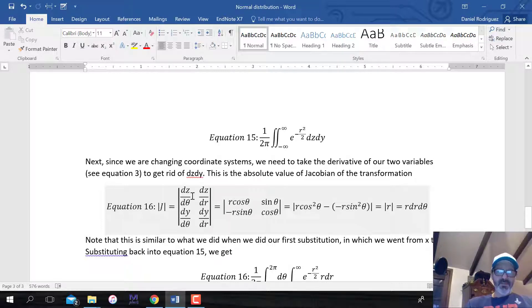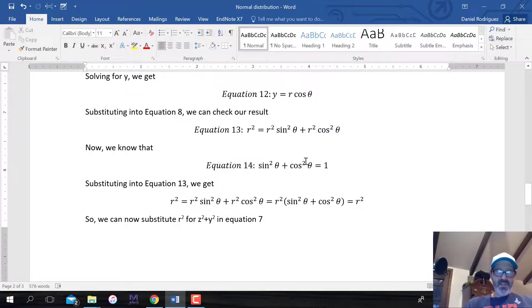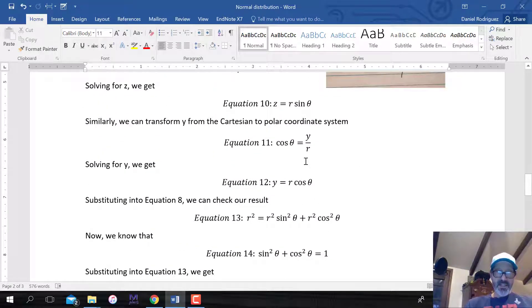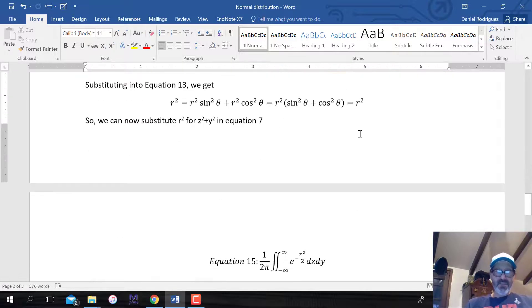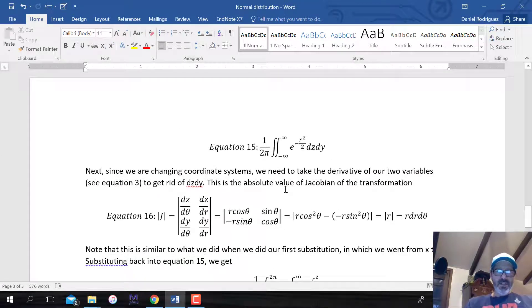We just showed that this works out fine. So we can now substitute r squared for z squared plus y squared in equation 7. We substitute r squared for z squared plus y squared. We've already simplified it, but we still have these dz and dy. This is still in the Cartesian coordinate system, and we want it to be in the polar coordinate system.